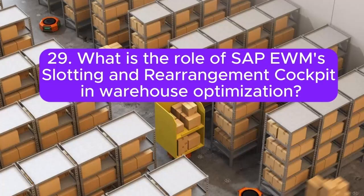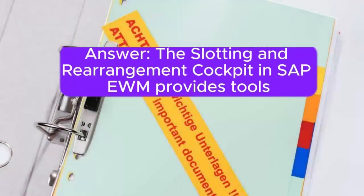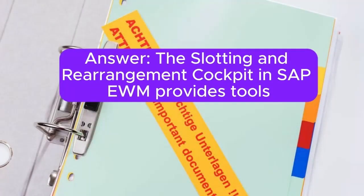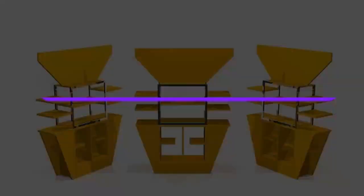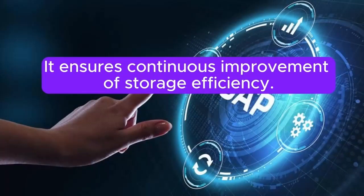Question 29: What is the role of SAP EWM's slotting and rearrangement cockpit? The slotting and rearrangement cockpit in SAP EWM provides tools for optimizing storage bin assignments and rearranging goods within the warehouse. It ensures continuous improvement of storage efficiency.